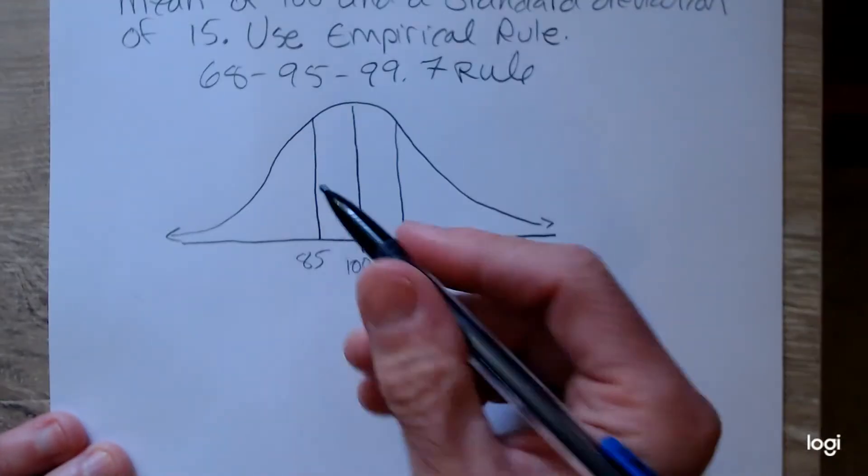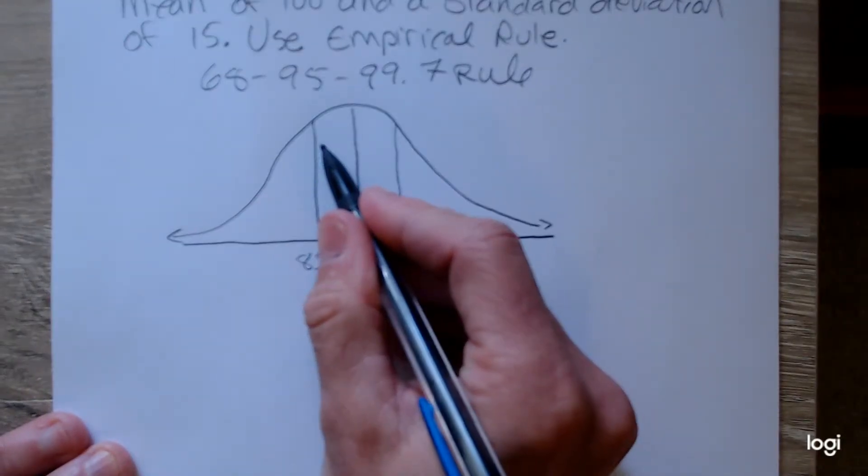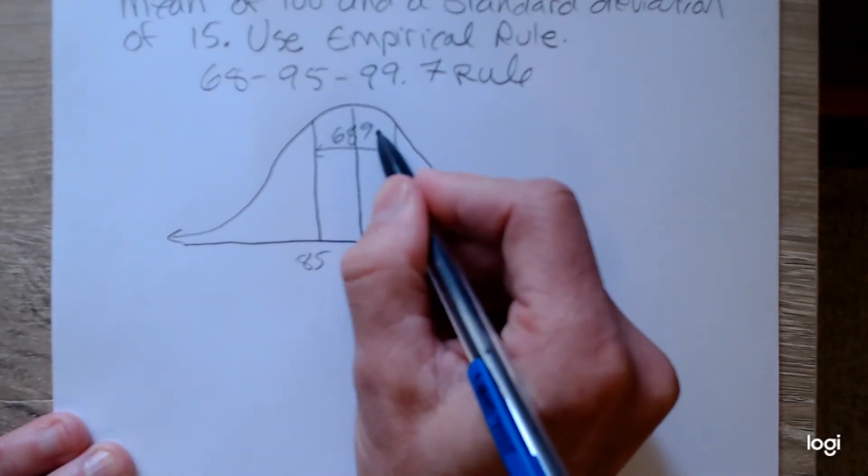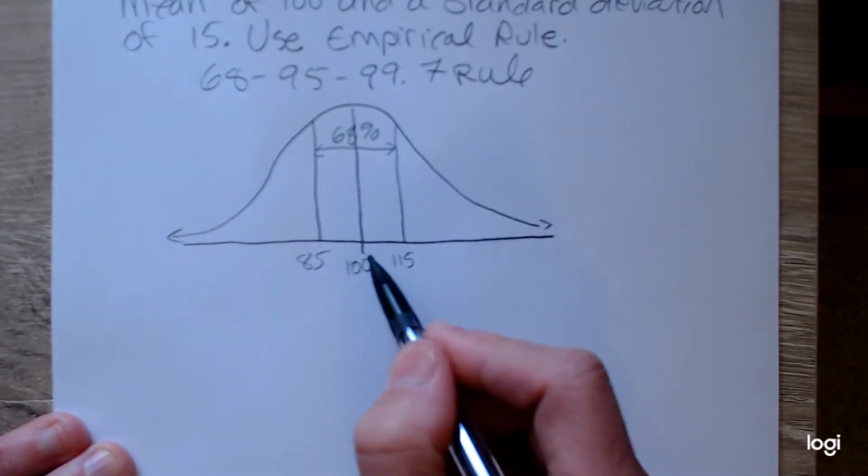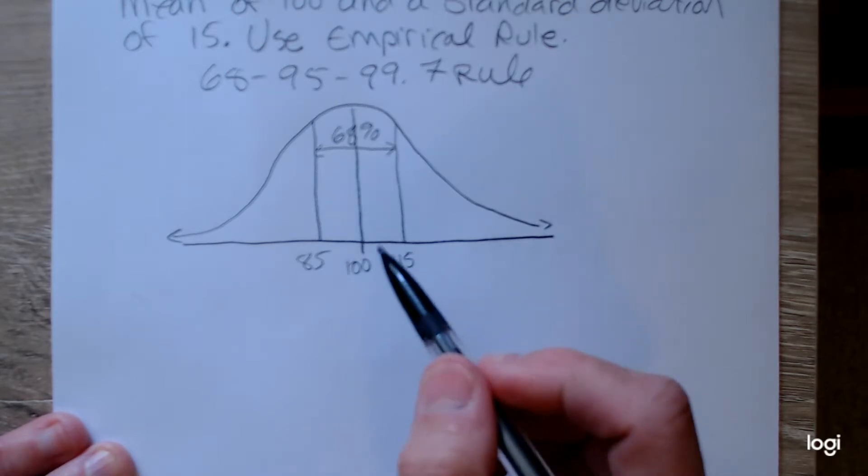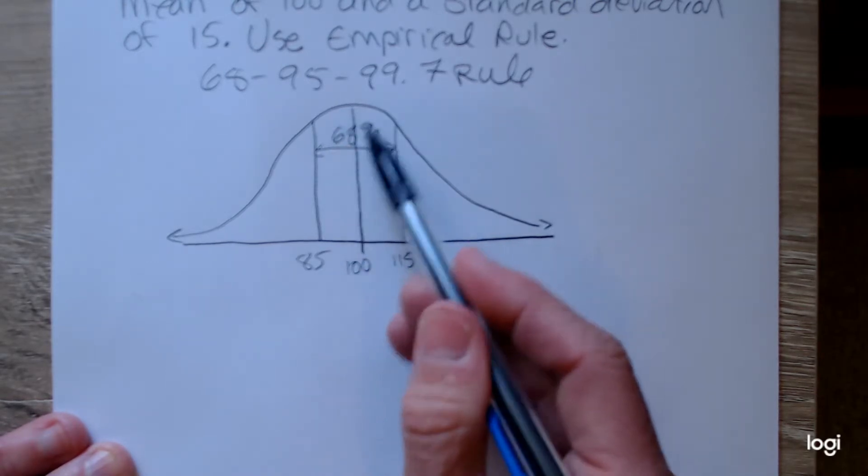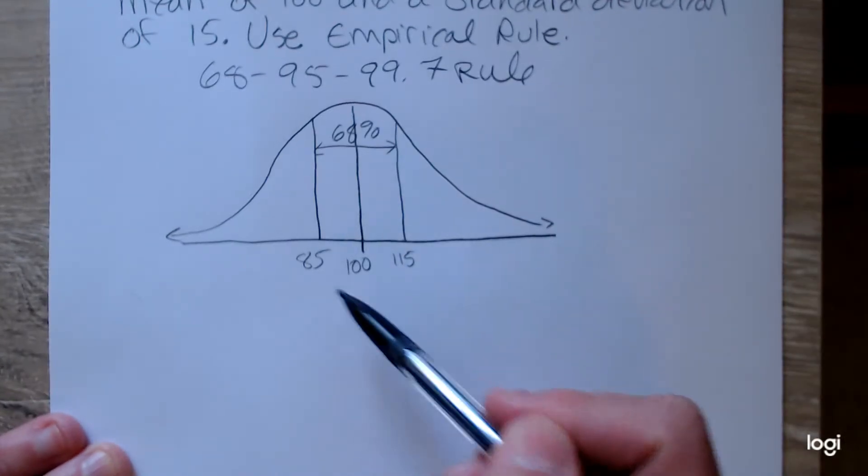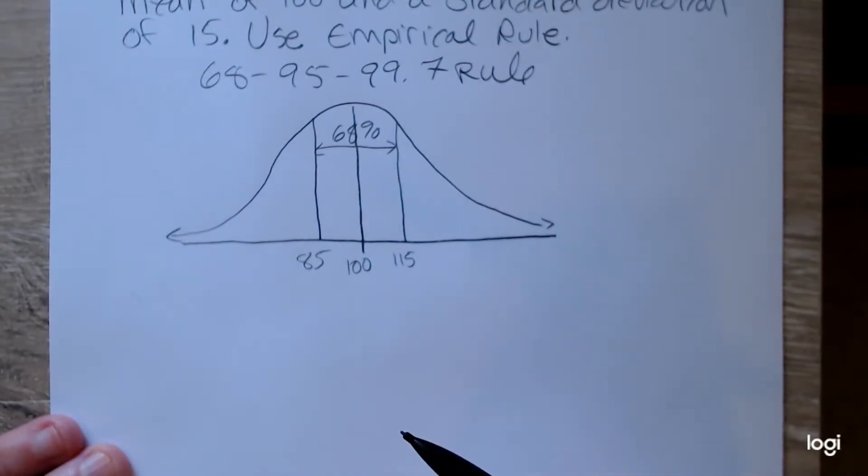So the empirical rule says that 68% of the values are captured between or within one standard deviation of the mean. So if I were to shade the area under the bell curve between 85 and 115, I will have captured or shaded 68% of the values.